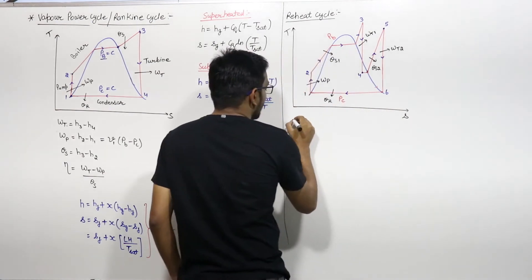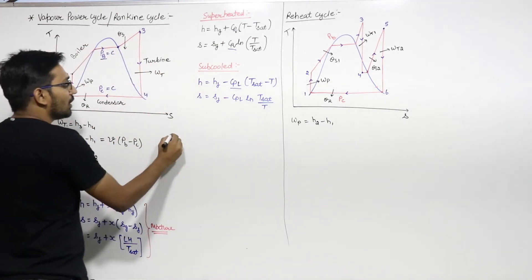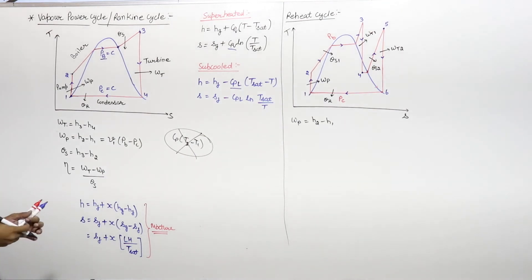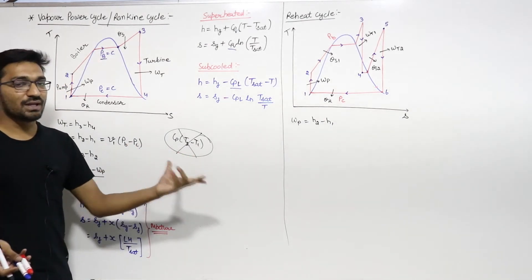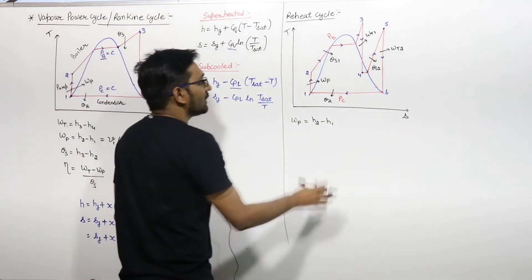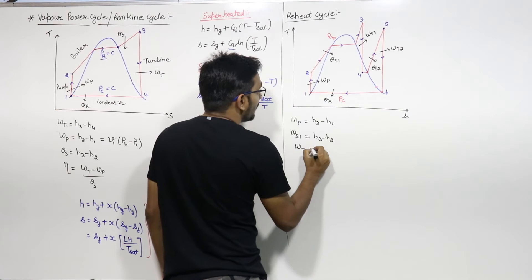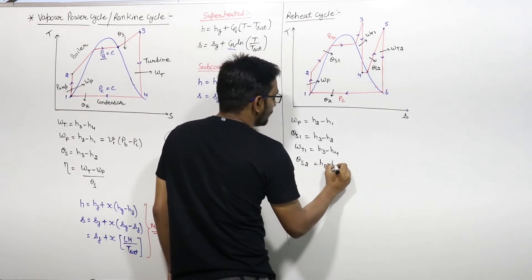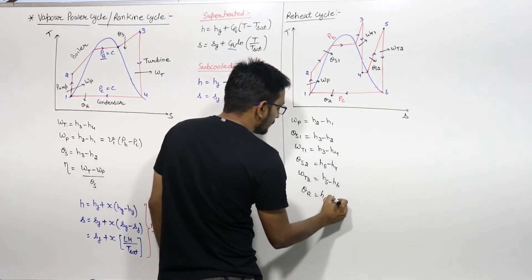Work required by the pump is H2 minus H1. One important note: do not use the formula CP into (T2 minus T1) in temperature form — that is for ideal gases. Steam is never an ideal gas, so always work in enthalpy form using the steam table. Heat supply 1 is H3 minus H2. Work done by turbine 1 is H3 minus H4. Heat supplied second is H5 minus H4. Work done by turbine 2 is H5 minus H6. Heat rejected is H6 minus H1.